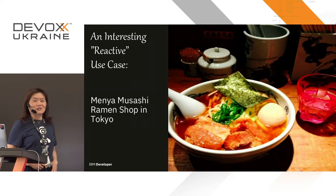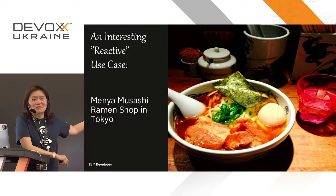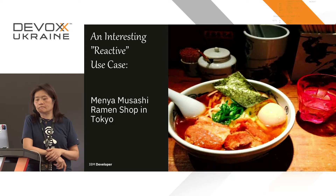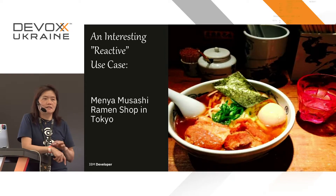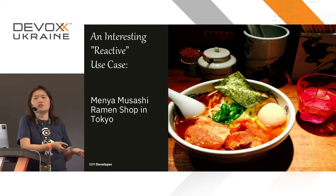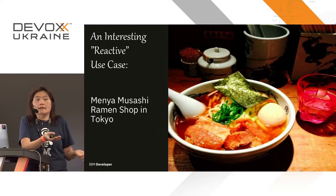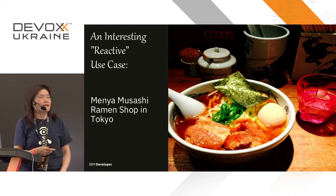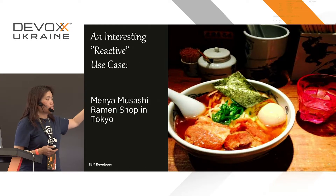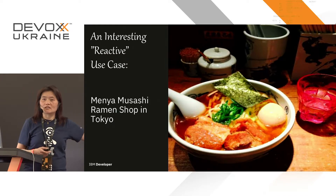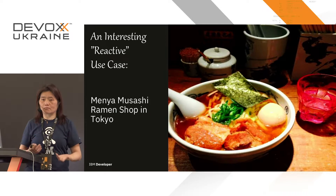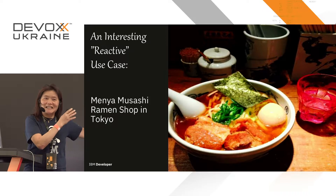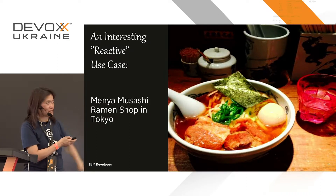Why do we want to use reactive? Someone who hasn't done any reactive programming might wonder — you can just use regular Spring MVC to achieve what you're trying to do. I'm using a noodle shop as a use case scenario to show where a reactive approach can be employed.